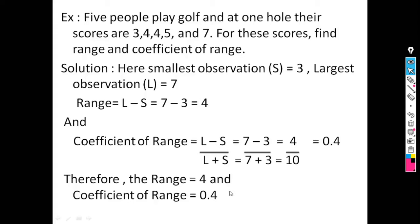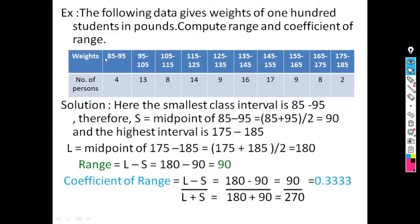Now we will see another example. The following data gives weights of 100 students in pounds; compute the range and coefficient of range. The data is in continuous type. For continuous type of data, we need to find the smallest observation and the largest observation differently.